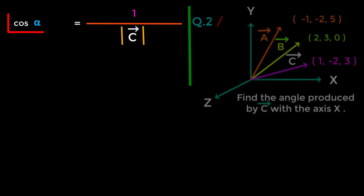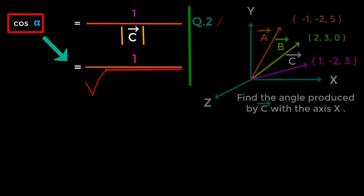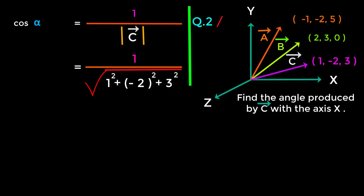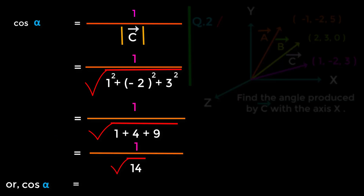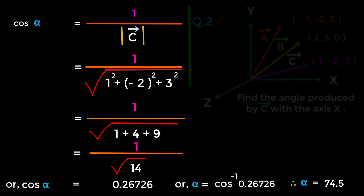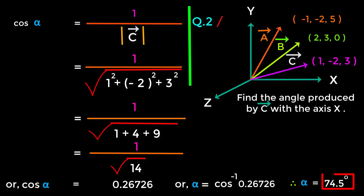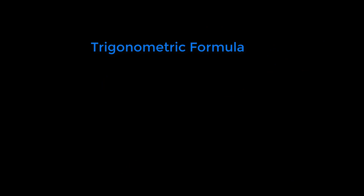So cos alpha equals 1 over square root of (1 plus 4 plus 9), which is 1 over square root of 14. This gives cos alpha equals 0.26726, so alpha equals cos inverse of 0.26726. Therefore alpha equals 74.5 degrees. This is the value of the angle between the vector and the x-axis.